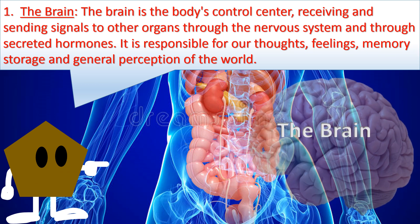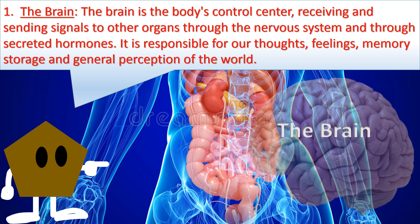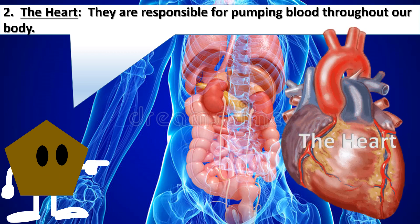1. The brain is the body's control centre, receiving and sending signals to other organs through the nervous system and through secreted hormones. It is responsible for our thoughts, feelings, memory storage, and general perception of the world. 2. The heart is responsible for pumping blood throughout our body.